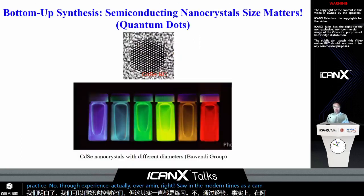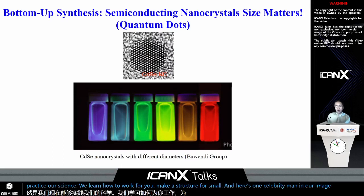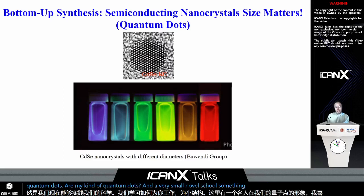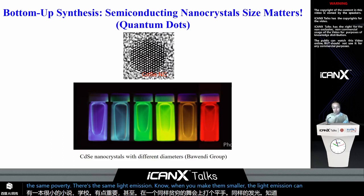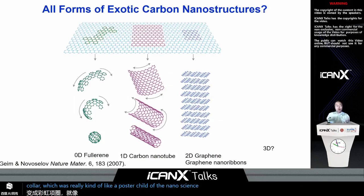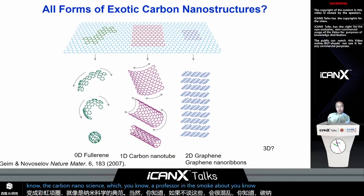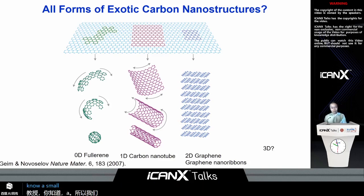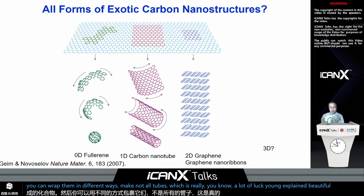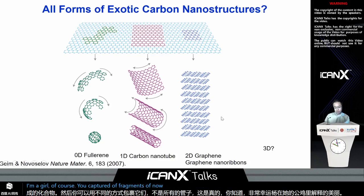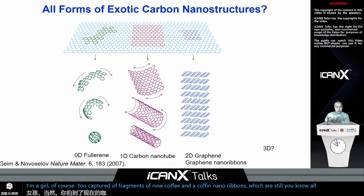In the modern times, as a chemist, we now learn how to make structures really small. Here's one celebrated image of quantum dots — semiconductor quantum dots, very small nanoscale semiconductors. When you make them smaller and smaller, the light emission can be tuned into a rainbow of colors, which is a poster child of nanoscience. It would be remiss not to talk about carbon nanoscience: we can have buckyballs — small molecular-level nanoscale objects made out of carbon — and wrap them in different ways to make nanotubes, as Professor Yan Li explained beautifully. There are also graphene and graphene nanoribbons.